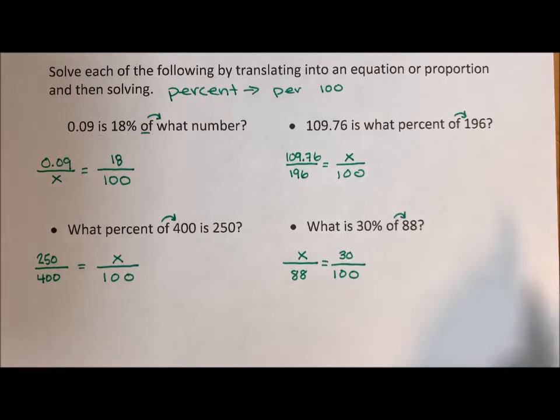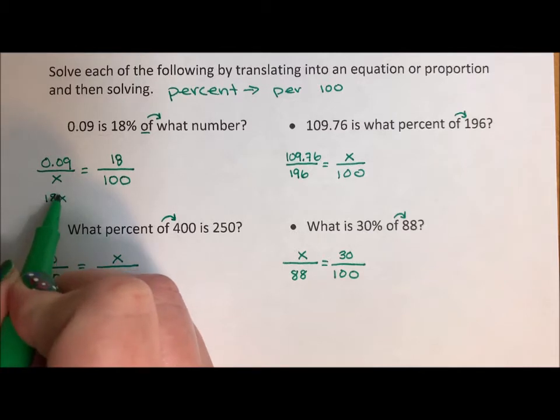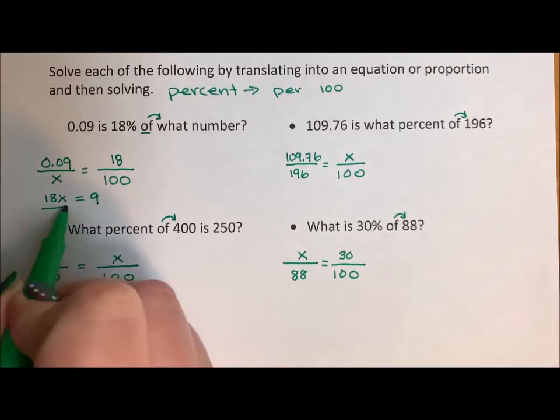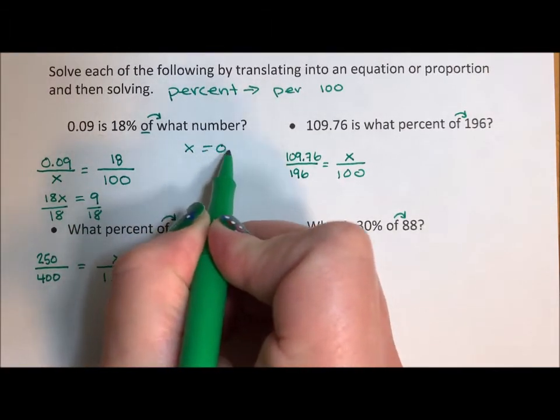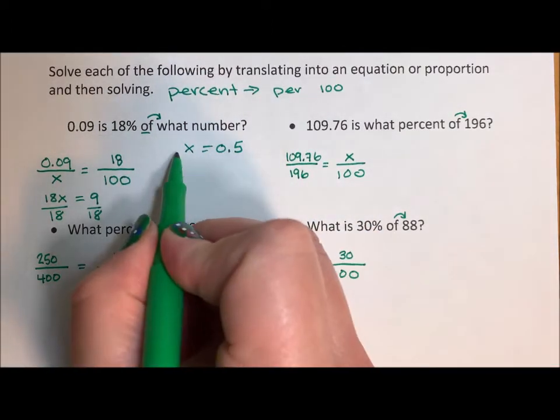Now with a proportion, you cross multiply. So the 18 and the X multiply, the 0.09 and 100 multiply, divide, and I get that X is equal to 0.5. I like fractions, but when you start with a decimal, you answer with a decimal, and that's my answer.